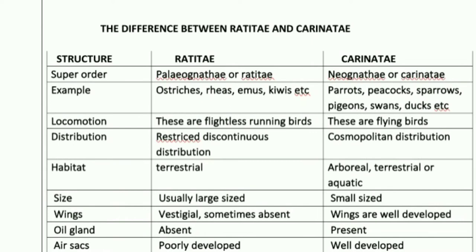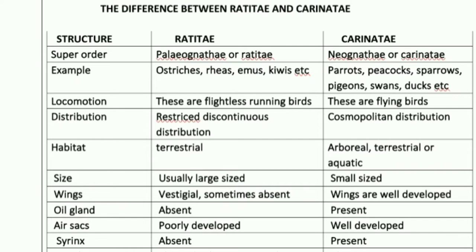Now let us move on to the differences. I have listed as many characters and structures as possible differentiating these two super orders. The first column lists the structure, the second is Ratitae, and the third is Carinate. Ratitae belongs to super order Palaeognathia, with examples: ostrich, rhea, emu, and kiwi. Carinate belongs to Neognathia, with examples: parrot, peacock, sparrow, and pigeon.